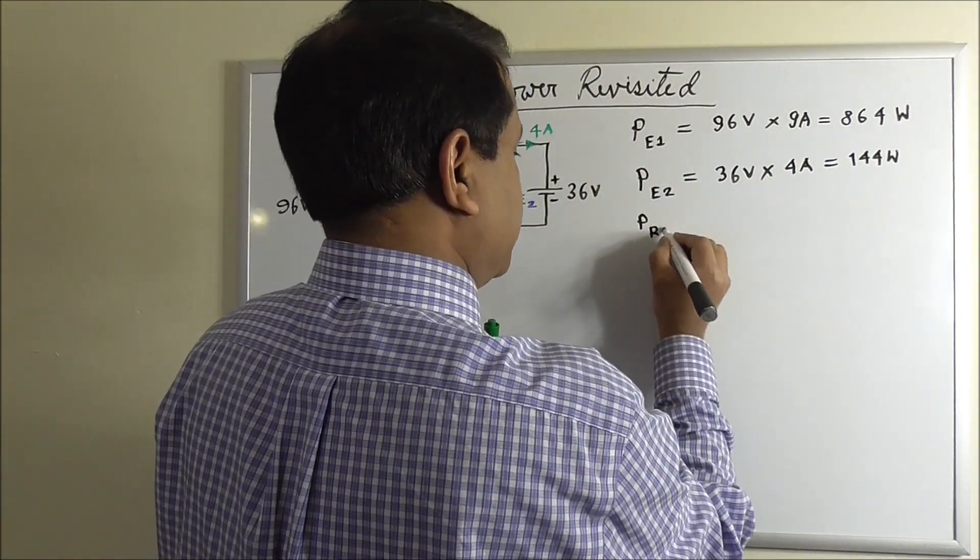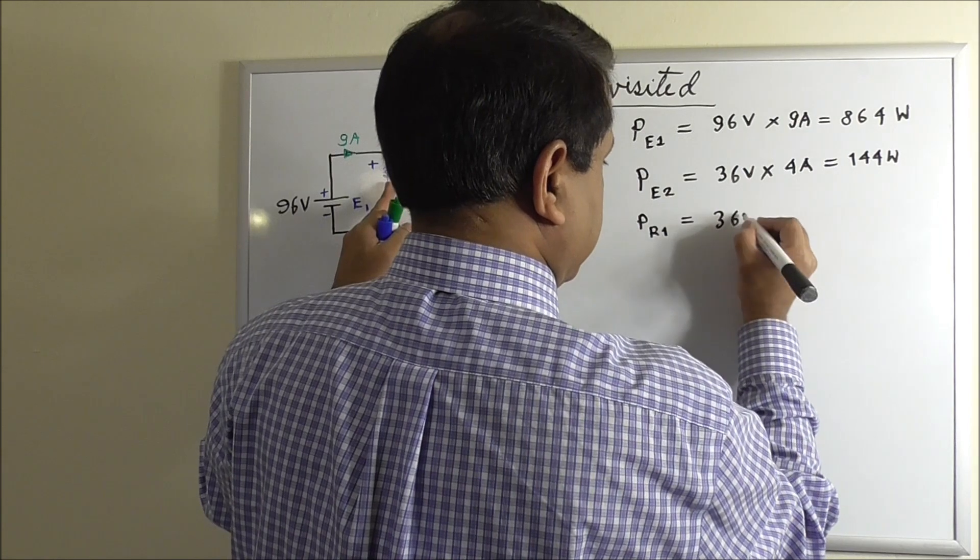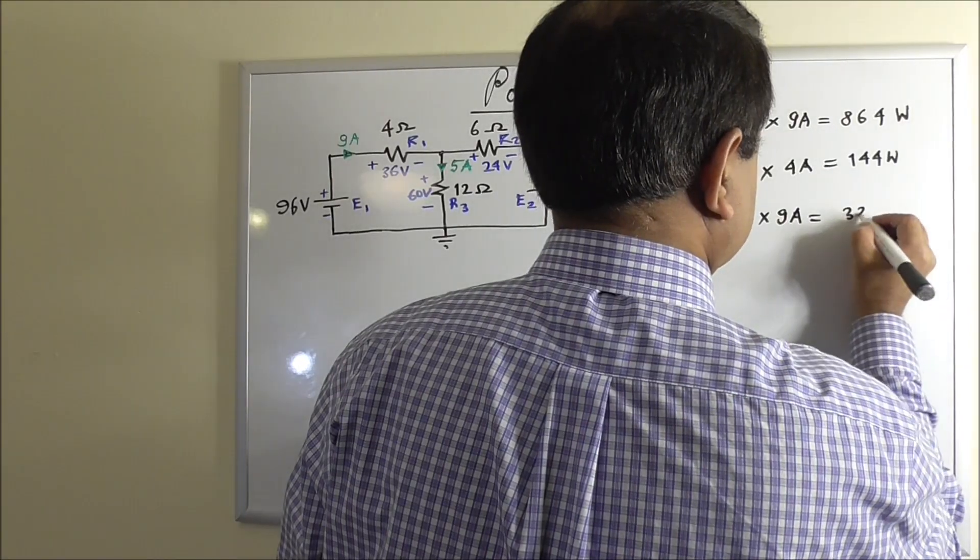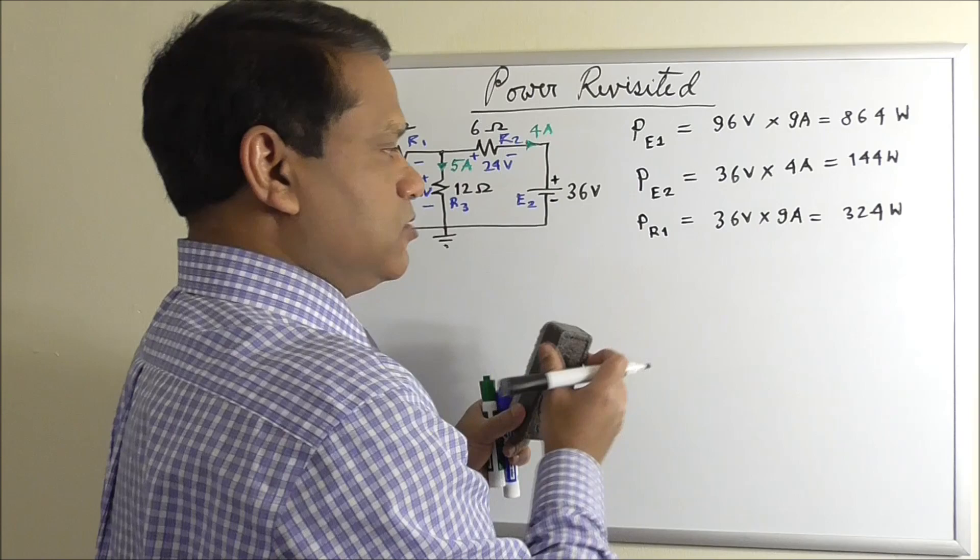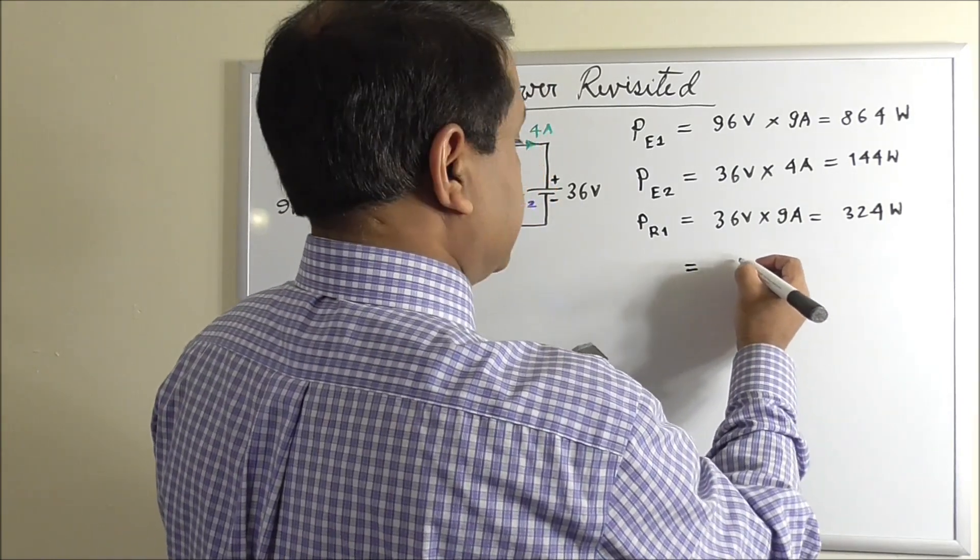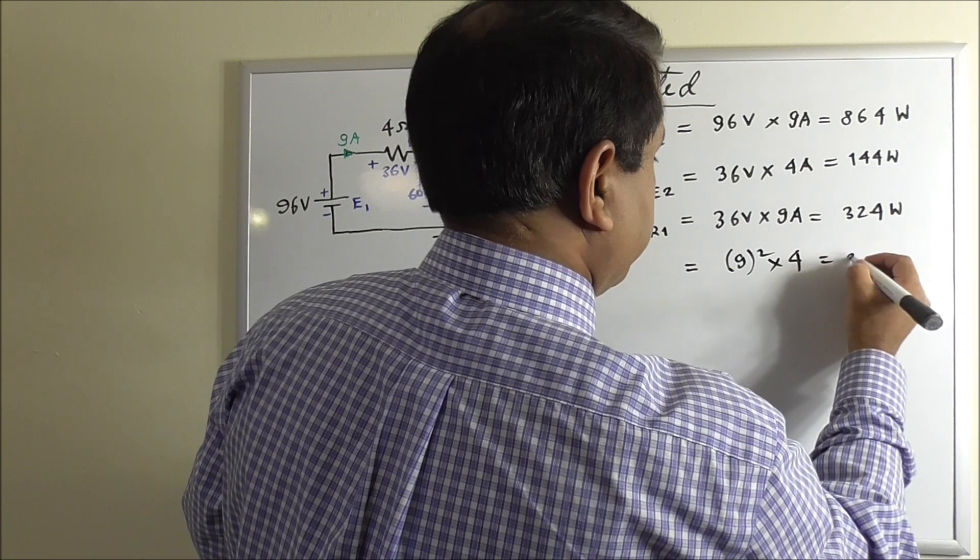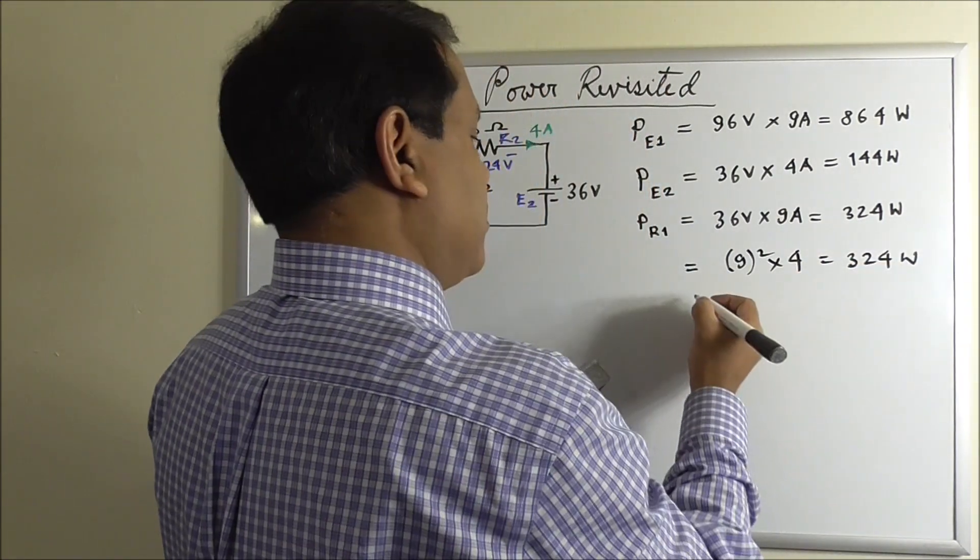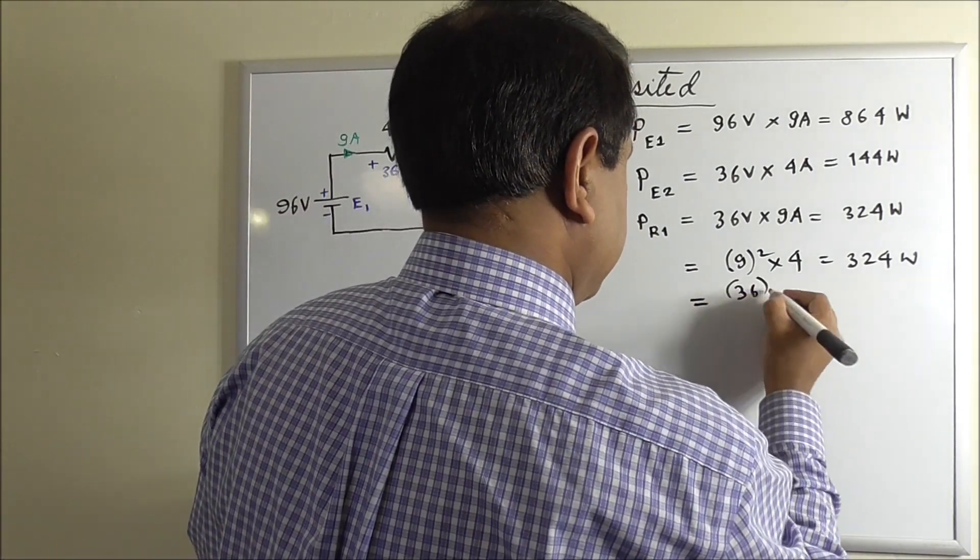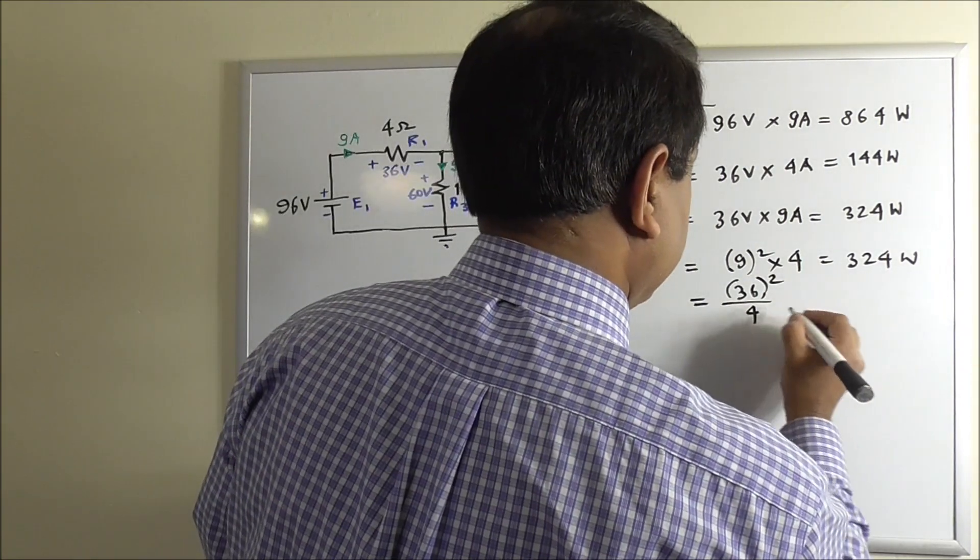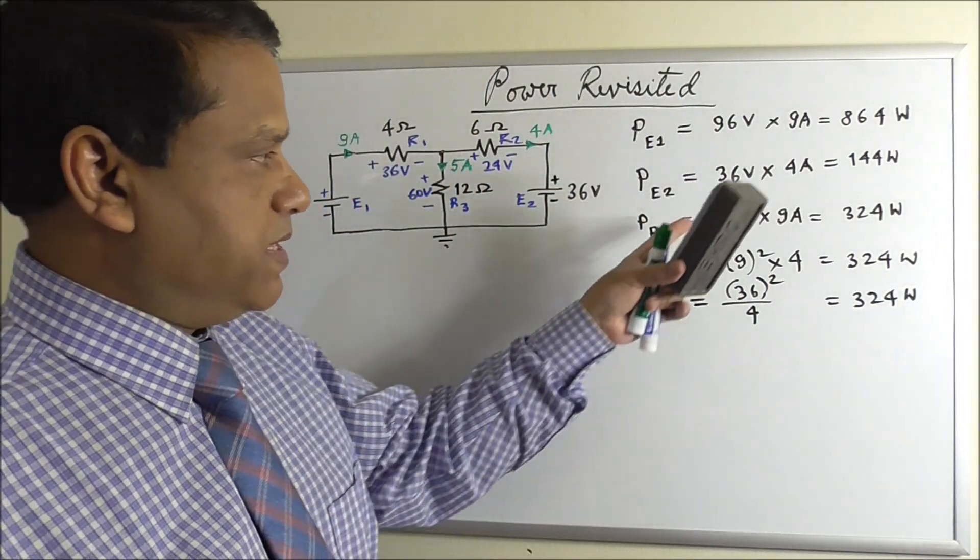The power of resistor R1 is V times I is 36 times 9. We could have found this power loss in resistance R1 using the other formulas, that is I²R, which is 9 squared times R is 4. Or you could have used V²/R, voltage drop is 36, 36 squared, R is 4. So any of these three formulas, V times I, I²R or V²/R would give you the same answer.